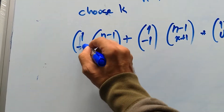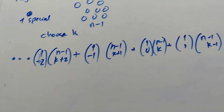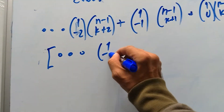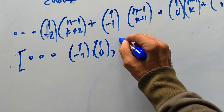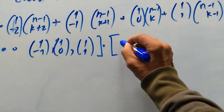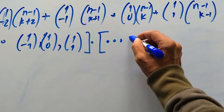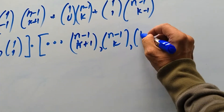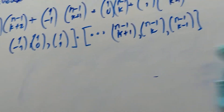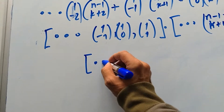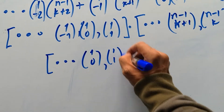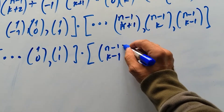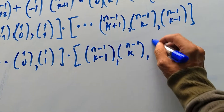Let's write the formula for extending the other direction. We get N minus 1 choose K plus 1, N minus 1 choose K, N minus 1 choose K minus 1, and they get bigger and bigger. We reverse this and write it as a dot product: (1 choose 0), (1 choose 1), dot dot dot, dotted with N minus 1 choose K minus 1, N minus 1 choose K, N minus 1 choose K plus 1, reversed.